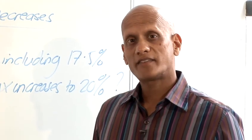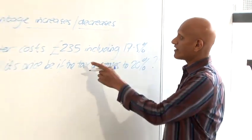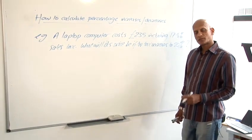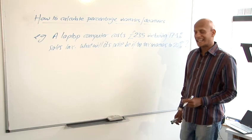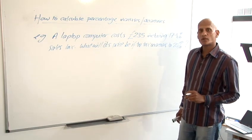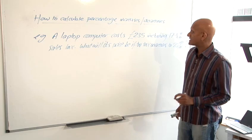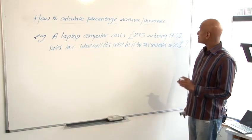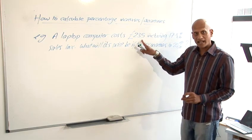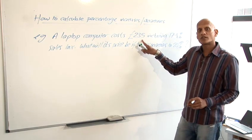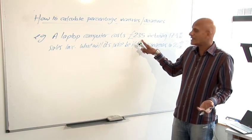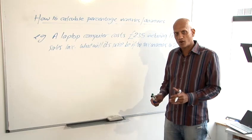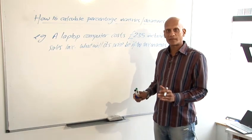So this time we have a laptop computer it costs 235 pounds including 17.5% sales tax and we want to know what its price is going to become if the rate of sales tax increases to 20%. Now the common mistake with this question when students try and answer it is they try and add on two and a half percent and the reason that's wrong is because it's not two and a half percent of 235 pounds that you're supposed to be adding on, it's two and a half percent of the original price, the price before any tax was included, which we don't know, so you can't just add on two and a half percent that would be wrong but if we use our same method we're not going to have any problems at all.